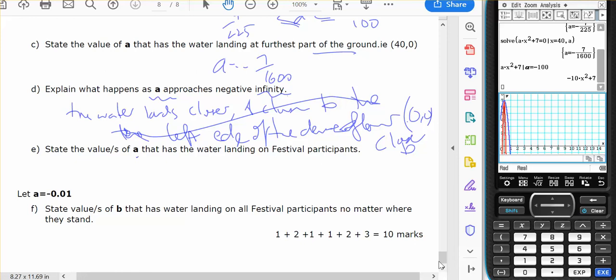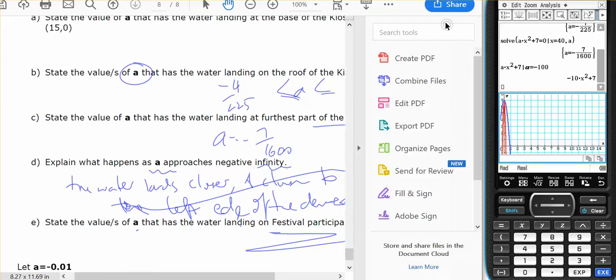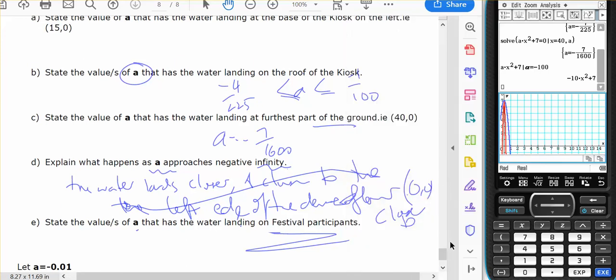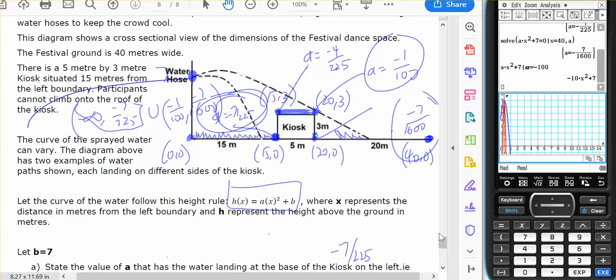The value of a for water to land on the festival participants. Well for it to land on the festival participants then the water is going to land here or here. So in between negative infinity and negative seven on 225, union with from here negative one on 100 up to here negative seven on 1600. There's the values of a for the water to land here and here which means it gets participants.